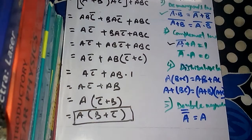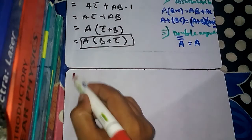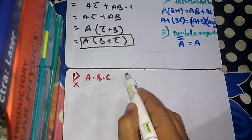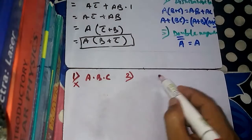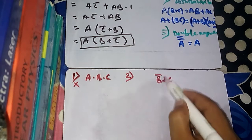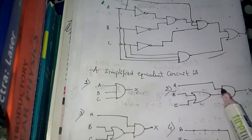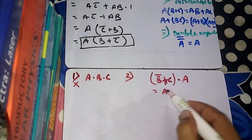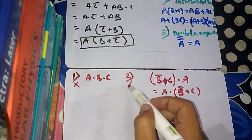Now we check each option. Option 1 is an AND gate with inputs A, B, C — giving Boolean expression A·B·C. This does not match, so option 1 is wrong. Option 2 has B-bar OR C going into an AND gate with A, giving A·(B-bar + C). This does not match either, so option 2 is also wrong.